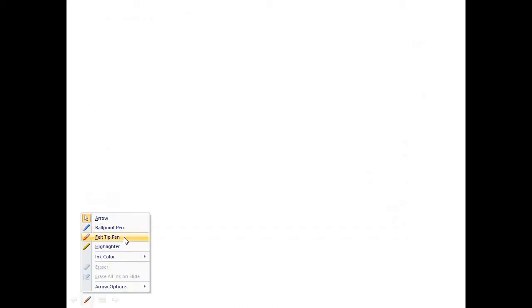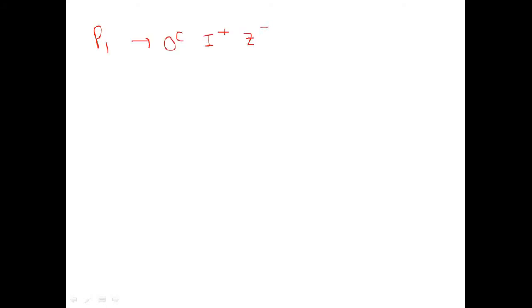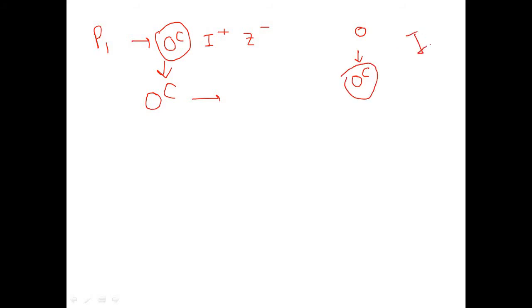For the first strain P1, whose genotype is OC I+ Z-, the operator here is mutated. Because of this mutation, the repressor molecule coded by I+ cannot bind to the mutated operator region. This mutation leads to inhibition of repressor binding.